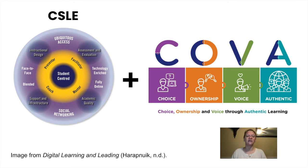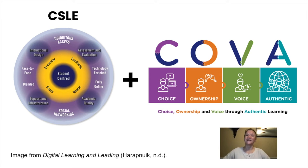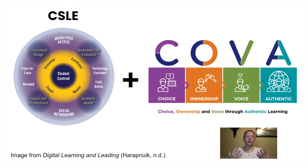One of the most essential tenets of the ADL program is CSLE plus COVA — creating significant learning environments through choice, ownership, and voice through an authentic learning experience. I feel that the best way to implement my innovation plan is to model this course off of what we did in the ADL program. Learners will get to analyze systems and workflows in GCISD and work in groups to improve something authentic to their position, and they'll have choice and therefore ownership, and therefore they can develop their voice through reflection and the implementation of their authentic plan.